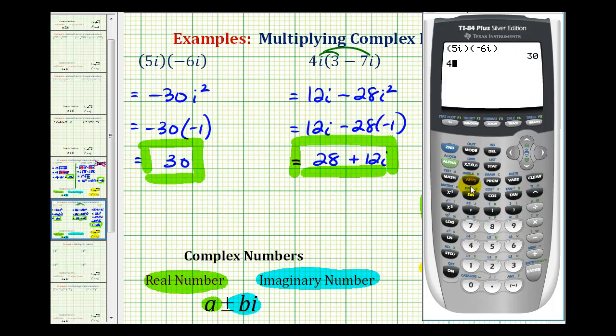Next, we have 4i times the quantity 3 minus 7i. This verifies our second product.